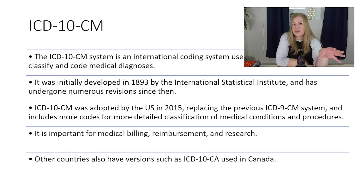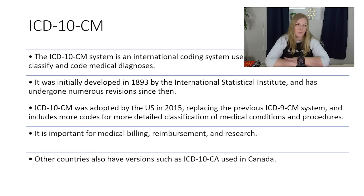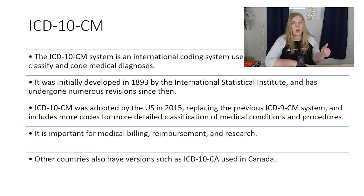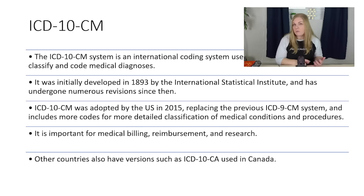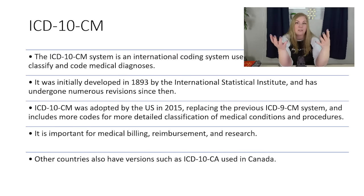There are different tweaked versions of ICD-10 used in different countries. For example, ICD-10-CA is the version used in Canada. Our ICD-10-CM was developed by the World Health Organization and we adopted it in the U.S. in 2015, which replaced our ICD-9 coding system. The ICD-10 coding system includes a lot more codes and a lot more specificity than our previous versions did, including right-left laterality for different disorders and more detailed classification of medical disorders, medical statuses, risks, and other important patient data.